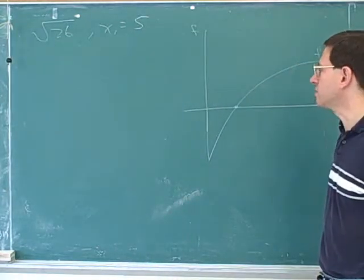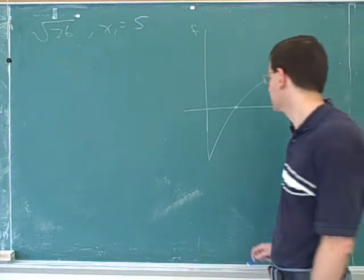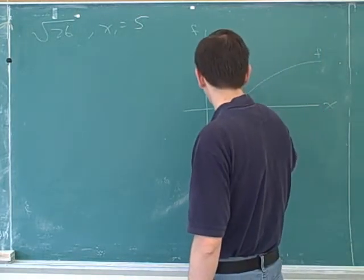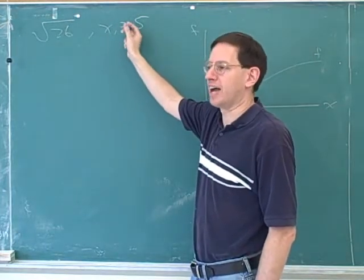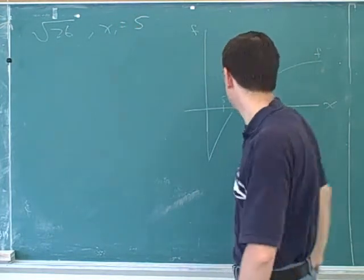And the way you do that is you just take a guess as to what the root is. So for example, in this case, they told us that our first guess should be x equals five. We're going to guess that x equals five is the root.